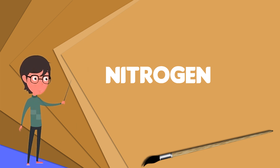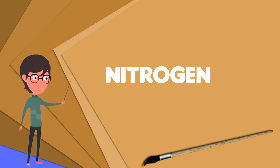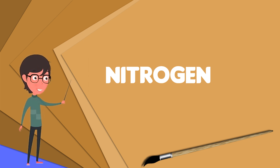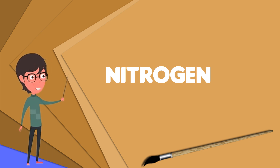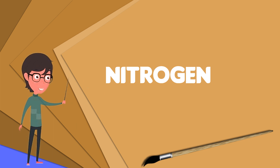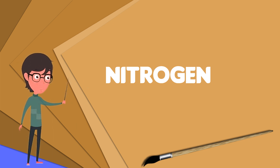Antoine Lavoisier suggested instead the name azote, from the Greek azotikos meaning 'no life,' as it is an asphyxiant gas. This name is used in many languages such as French, Russian, and Turkish, and appears in the English names of some nitrogen compounds such as hydrazine, azides, and azo compounds.